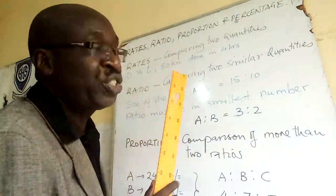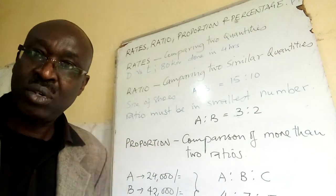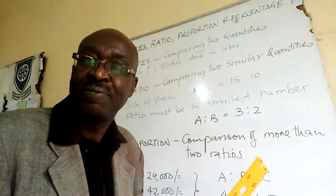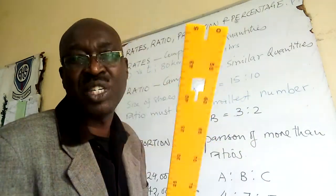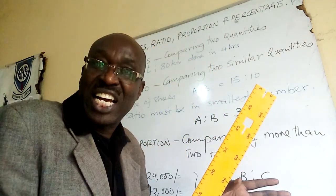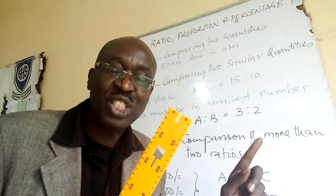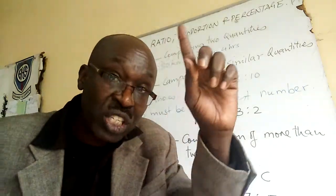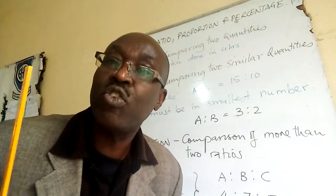Ratio is comparing two quantities of similar unit. I can compare how much I have — one million — with what you have — only a thousand. I can compare my money in Kenya shillings and your money in Kenya shillings. The units are the same: shillings, shillings. In that comparison, we talk about ratio, not rate. Ratio: comparing quantities of the same unit.